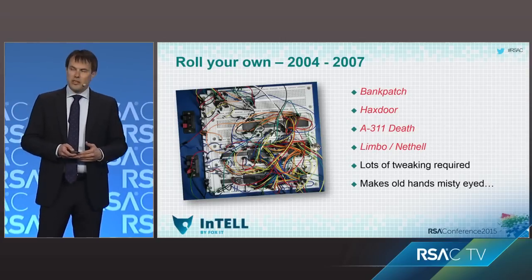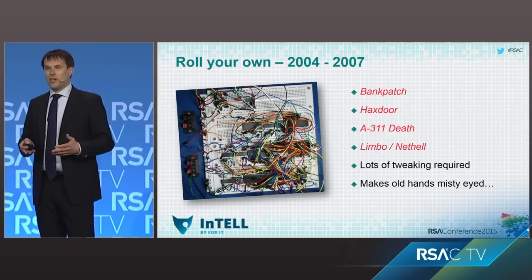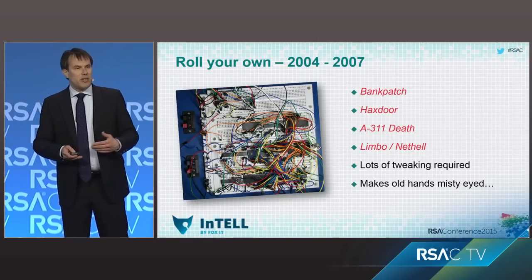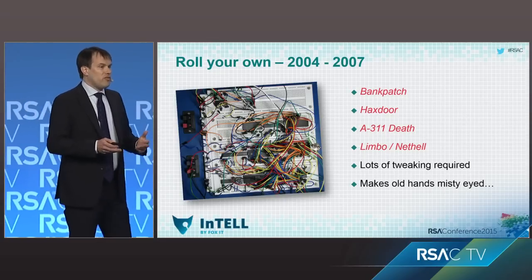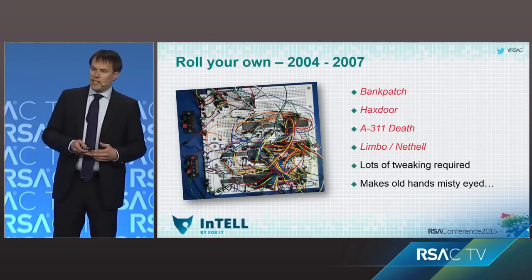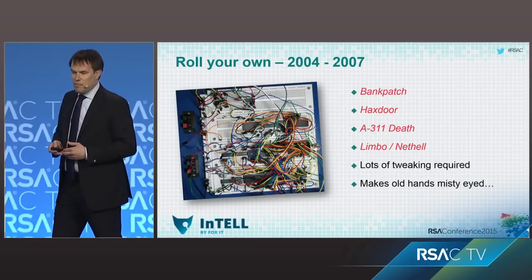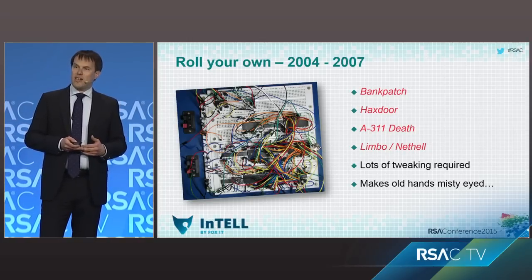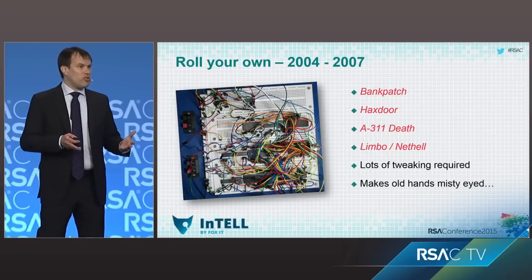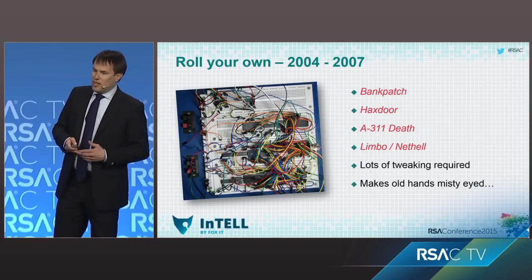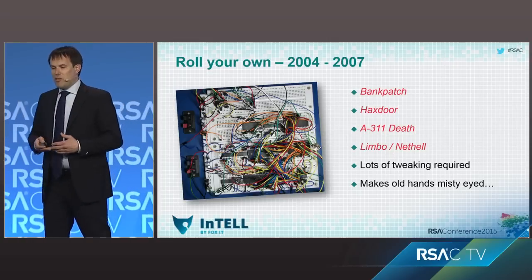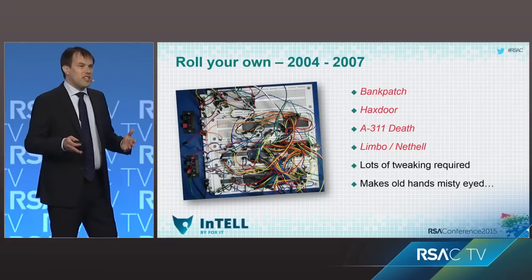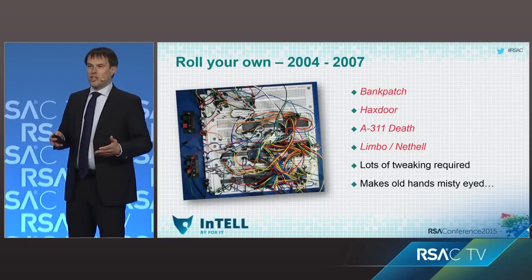The whole development basically started in 2004, and the period between 2004 and 2007 can be characterized as 'roll your own.' This is when the first families appeared and when attackers and developers were trying to figure out how to run these types of attacks — names like Bankpatch, Hackstore, A3-111-Death, Limbo, or Nethell. Back in those days it was very rudimentary, and to run a successful attack you had to be pretty technically skilled — you had to be able to develop and write code. If you talk to the old hands in this industry, at the mention of these names they all get very misty-eyed, thinking back to those early days when chasing Bankpatch or Nethell was exciting and new.